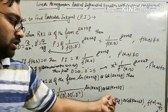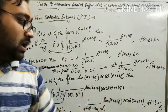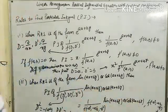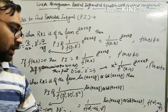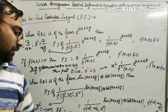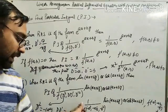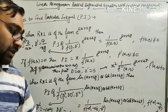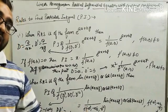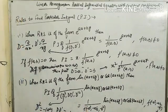If there is sine, then keep sine; if there is cosine, then keep cosine. The same condition applies — this particular denominator cannot equal 0. If it equals 0, then again we multiply by x, differentiate the denominator with respect to D, and then replace these particular terms again.